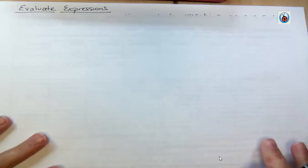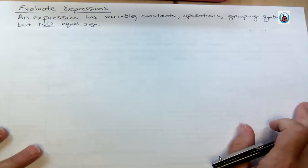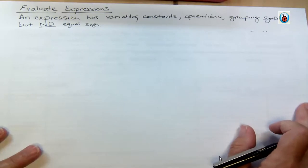When you're talking about an expression, an expression has variables, constants, operations, grouping symbols, but no equal sign. An equal sign makes it suddenly an equation and we're just talking about expressions, so no equal signs.